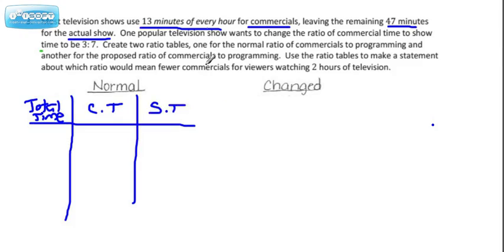In normal programming, we have 13 minutes for the commercials, and then we have 47 minutes for the show. Now if we add these two numbers together, we're going to get the 60 minutes, which, by the way, is equal to one hour. All of this is in minutes, so let's keep track of that.